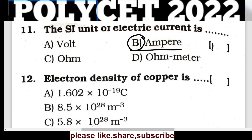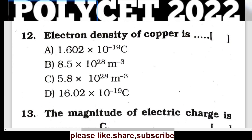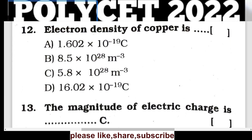Question 12: The electron density of copper is 8.5 × 10²⁸ per meter cubed (m⁻³). Option B is the correct answer.